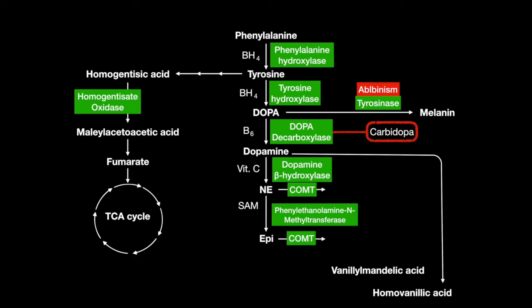Vanillylmandelic acid is named because it is an intermediate of the synthesis of artificial vanilla flavorings. It is produced by the same two enzymes: catechol-O-methyltransferase, or COMT for short, which turns norepinephrine into normetanephrine and epinephrine into metanephrine; and monoamine oxidase, or MAO, which turns both of these into vanillylmandelic acid. Levels of vanillylmandelic acid can be used to detect neuroblastoma of the adrenal gland.